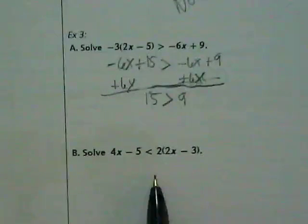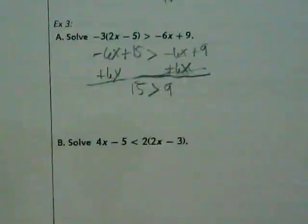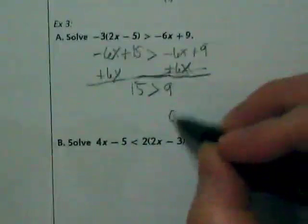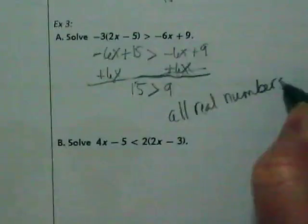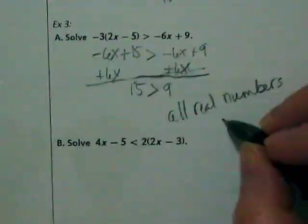Is that true? So what do you think that means if it's true? It means that all real numbers are possible solutions for this, which means it is infinite.